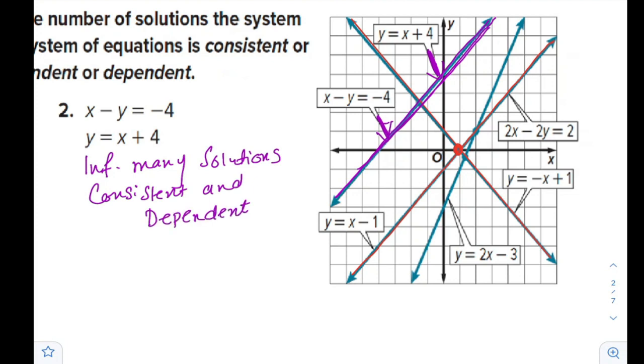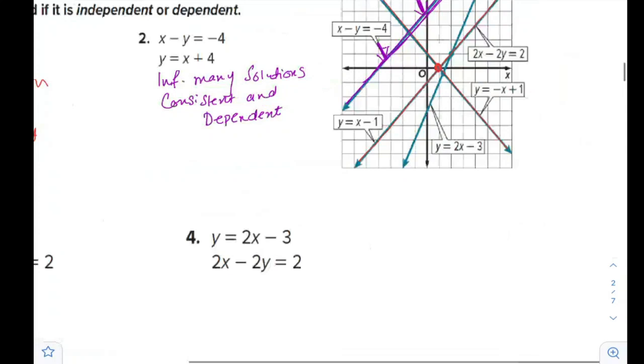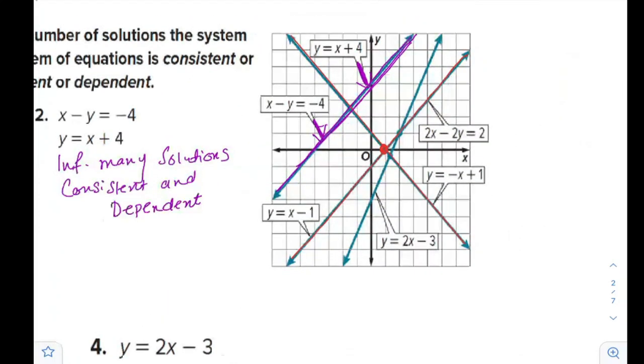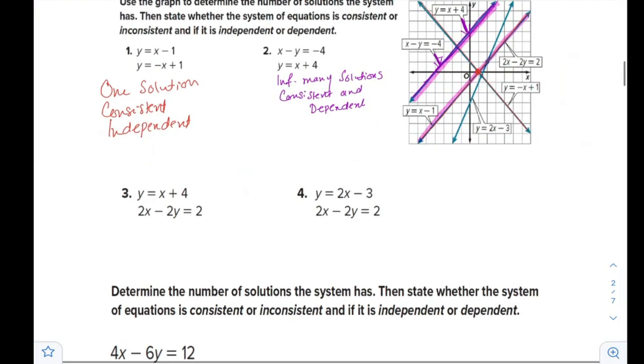Let's move to the next question. When you have y equals x plus 4 and 2x minus 2y equals 2, and it is very obvious, there are parallel lines. So since the lines are parallel, we say that there is no solution. They don't meet. And it is inconsistent.